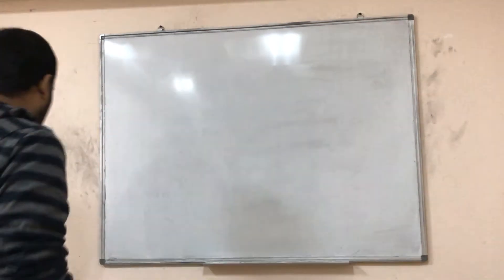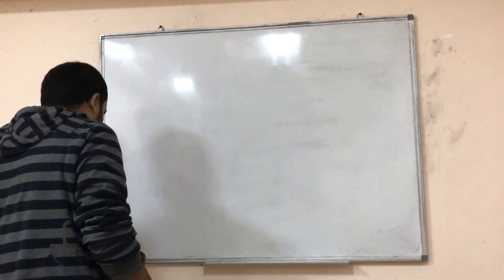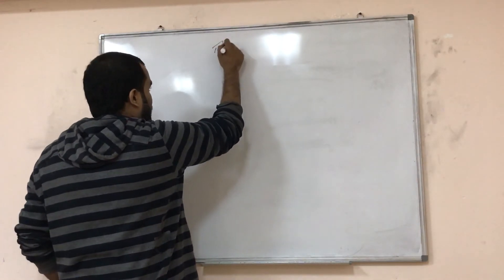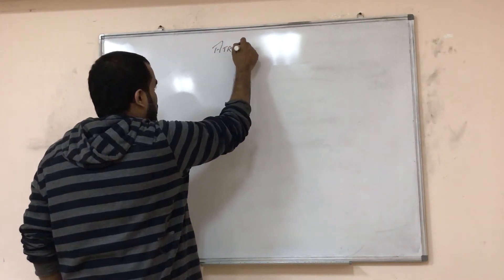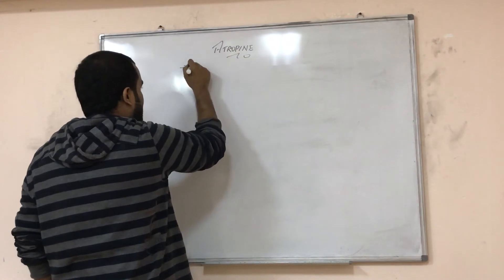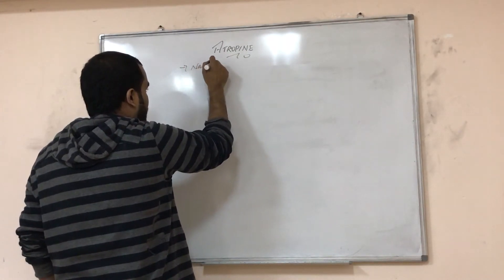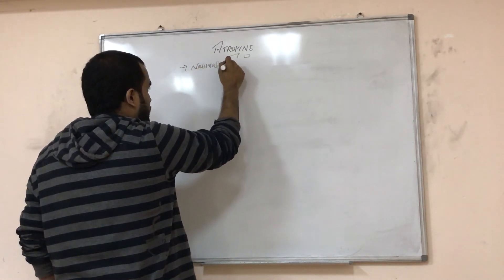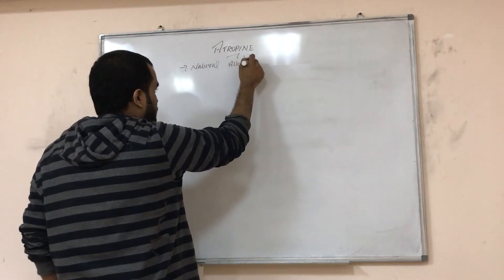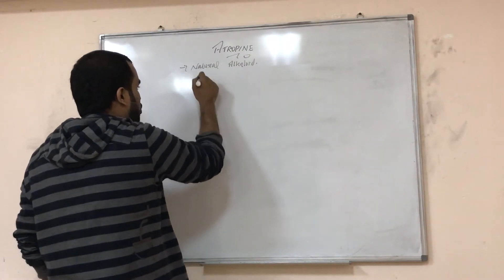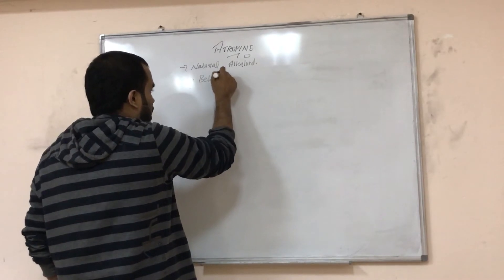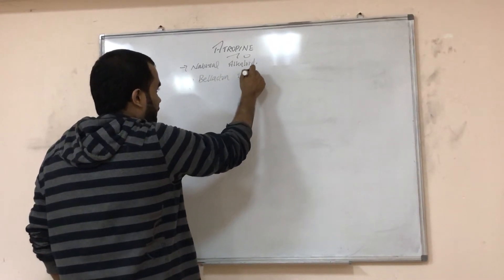The first step we are going to study is atropine. Atropine is called a natural alkaloid. It is obtained from a plant called Belladonna datura.